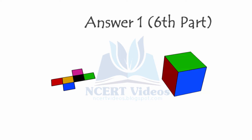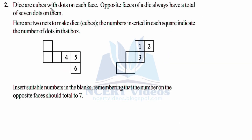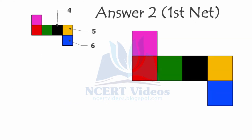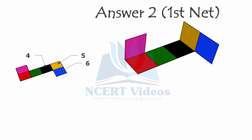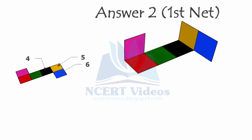Question two: dice are cubes with dots on each face. Opposite faces of a die always have a total of seven dots. Here are two nets to make dice - the number in each square indicates the number of dots. Insert suitable numbers in the blanks, remembering that the number on opposite faces should total to seven. First, let's check whether a cube is possible with this net - we will fold the yellow square and pink square.